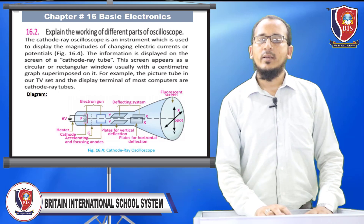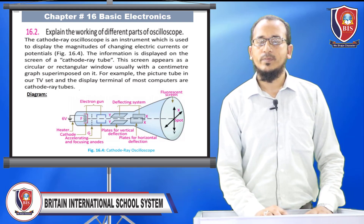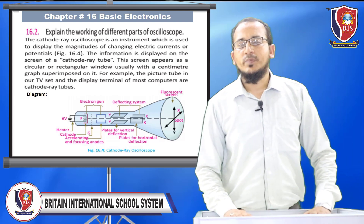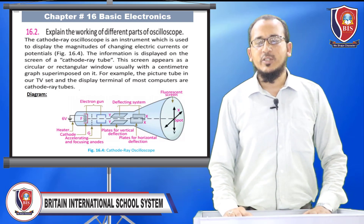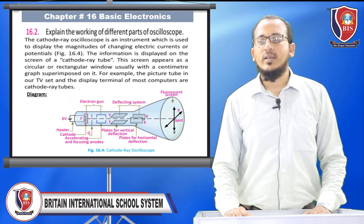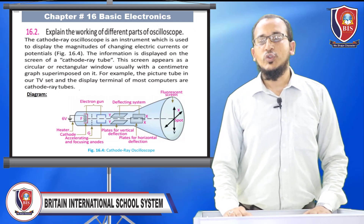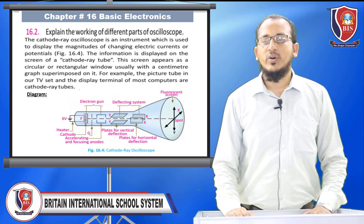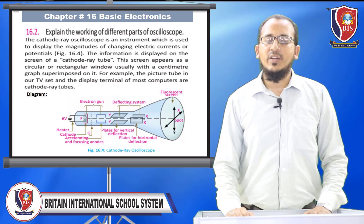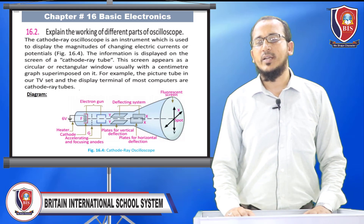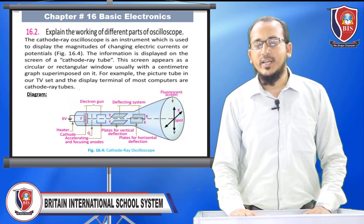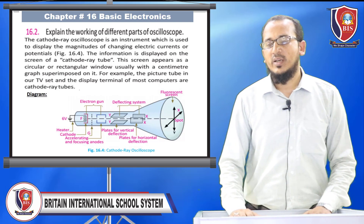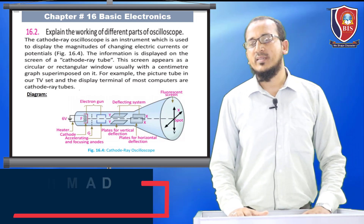Question number two: Explain the cathode ray oscilloscope. The cathode ray oscilloscope (CRO) is used to display the magnitude of changing electric currents or potentials. The information is displayed on the screen of a cathode ray tube, which appears as a circular or rectangular window usually with a centimeter graph superimposed on it. For example, the picture tube in a TV set and the display terminal of most computers are cathode ray tubes. It consists of a heater, cathode, accelerating grid, focusing anode, vertical deflecting plate system, horizontal deflecting plate system, and a fluorescent screen.